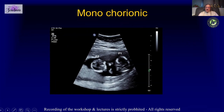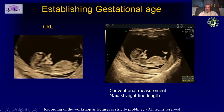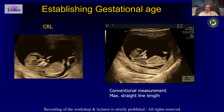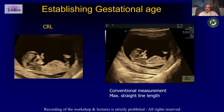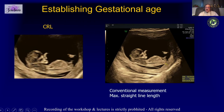The monochorionic pregnancy has a very thin membrane separating the two fetuses, and we know that the management of both these types is entirely different. We establish gestational age typically by looking at the CRL.